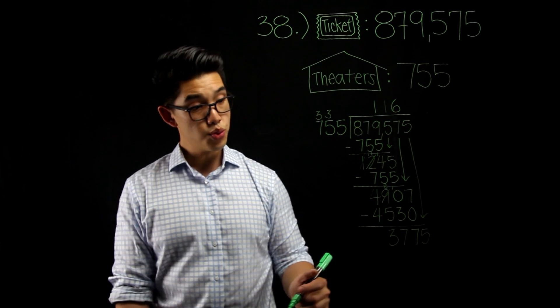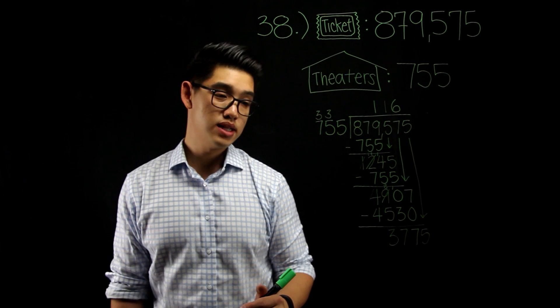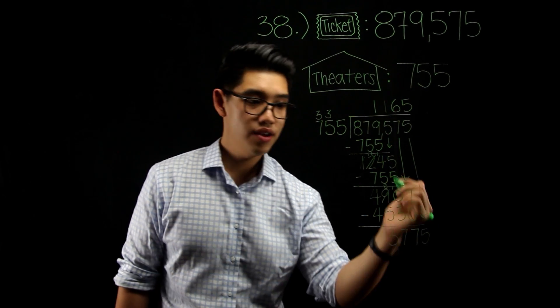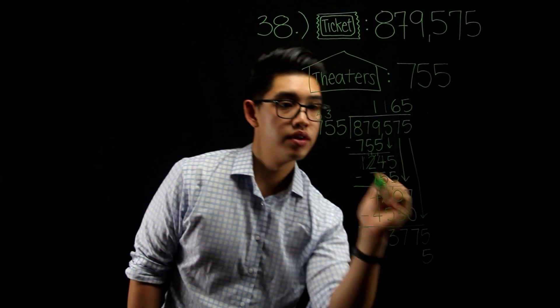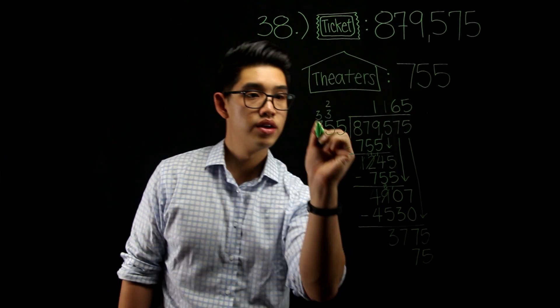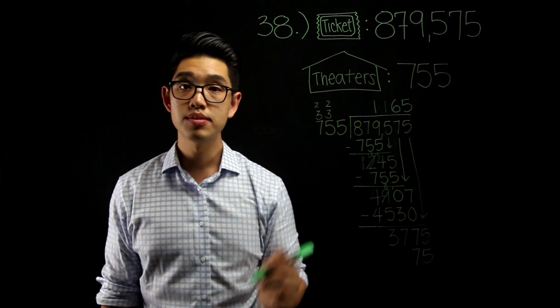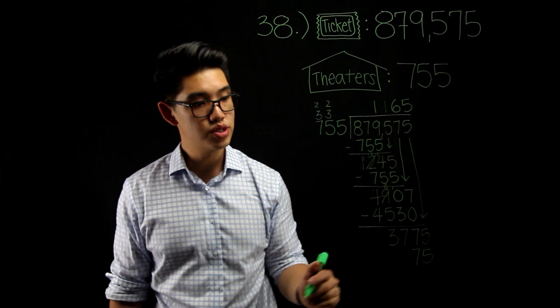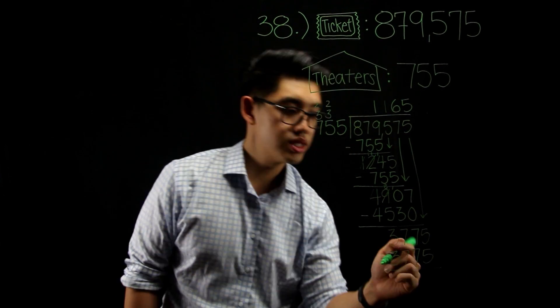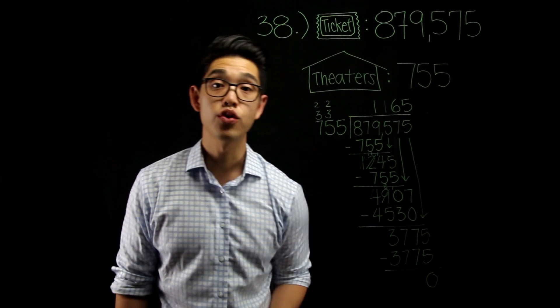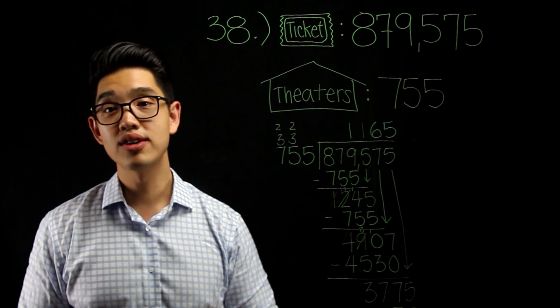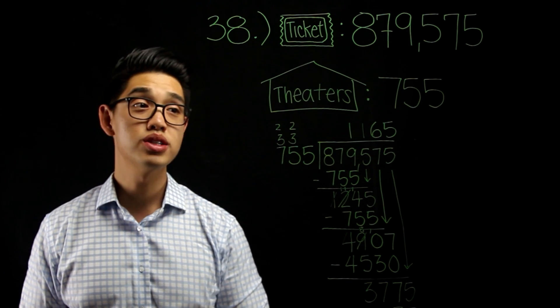755 goes into 3,775 five times. 5 times 5 is 25. 5 times 5 is 25, plus another 2, it's 27. 5 times 7 is 35, plus another 2, that's 37. And when we subtract everything here, we get 0. So, we have a remainder of 0. So, our answer means that there were 1,165 tickets sold per theater.